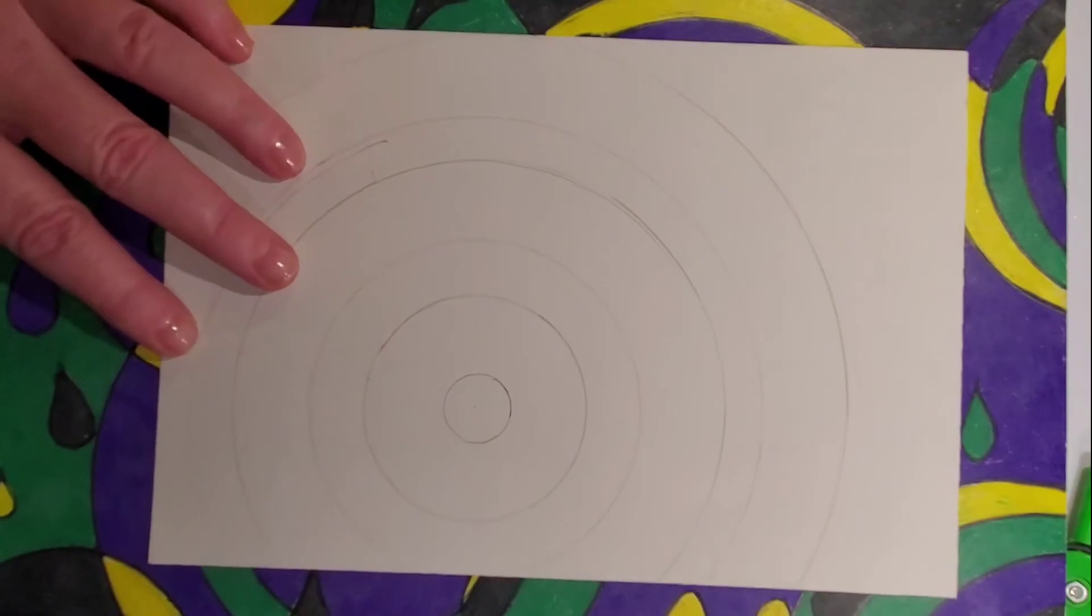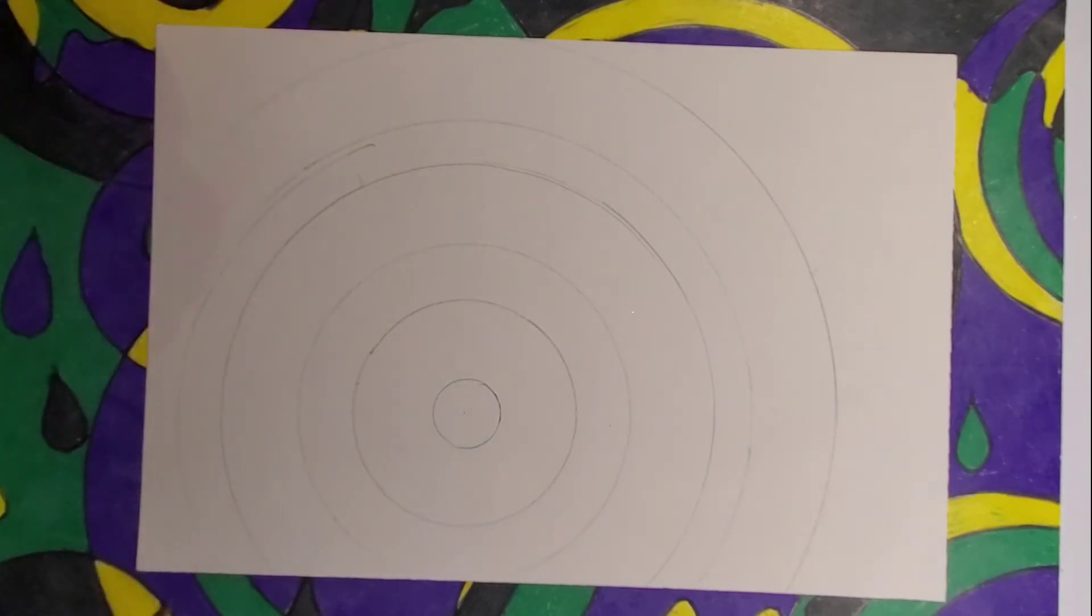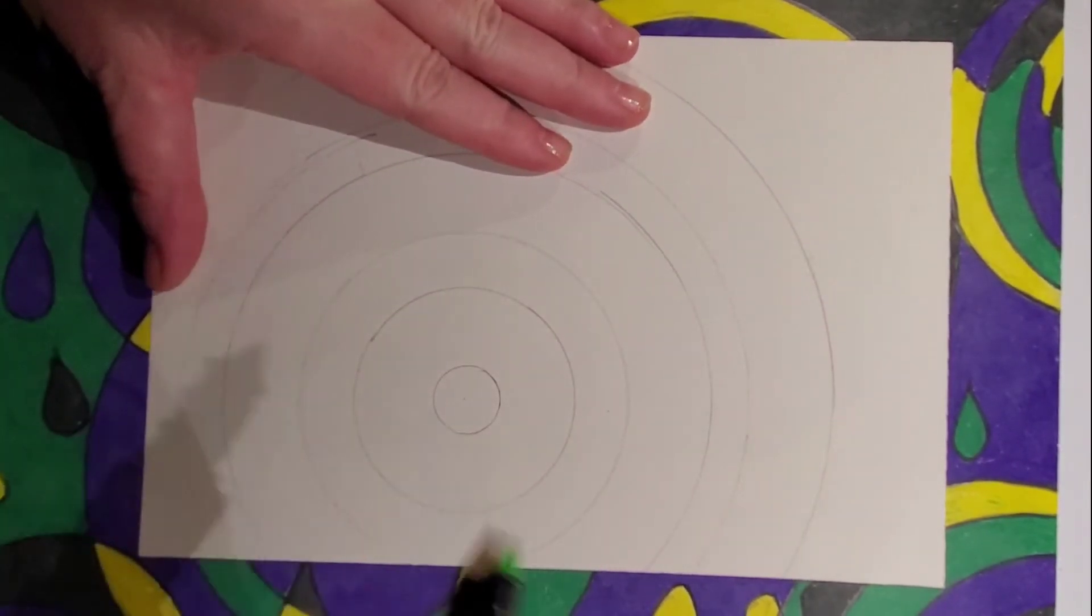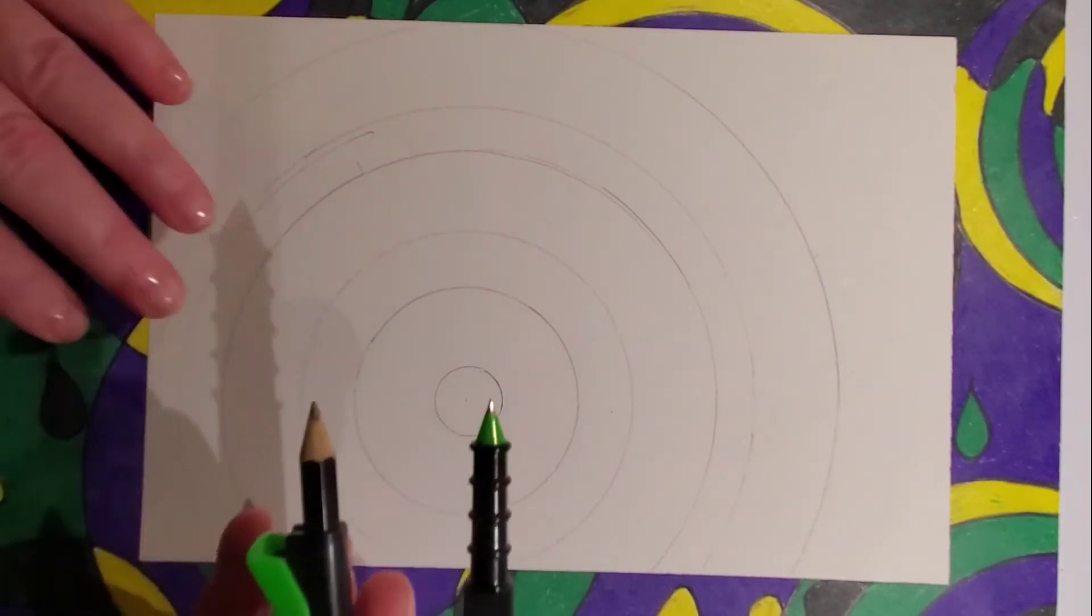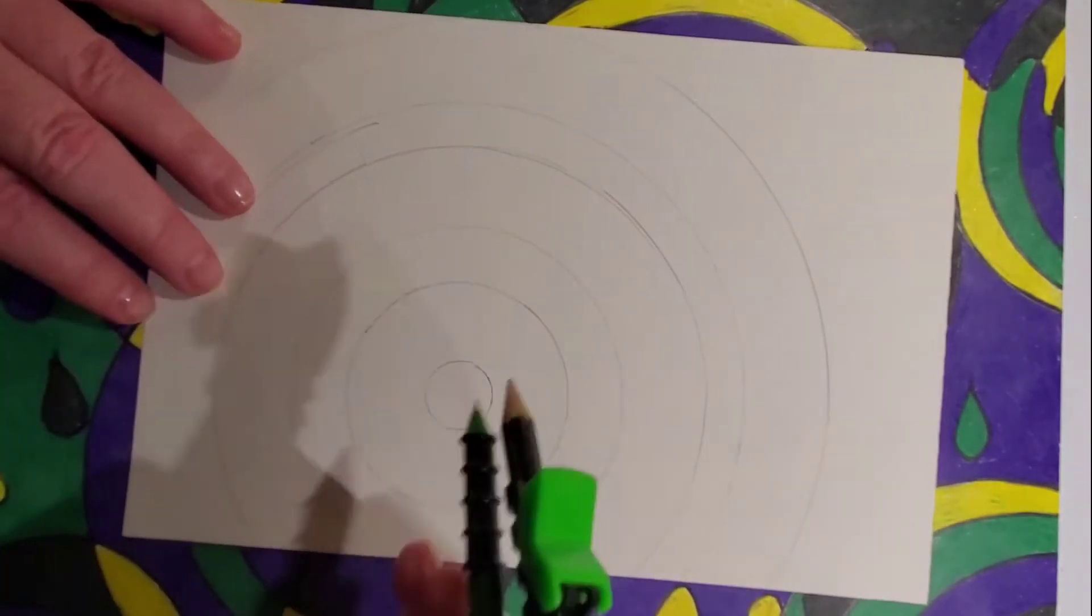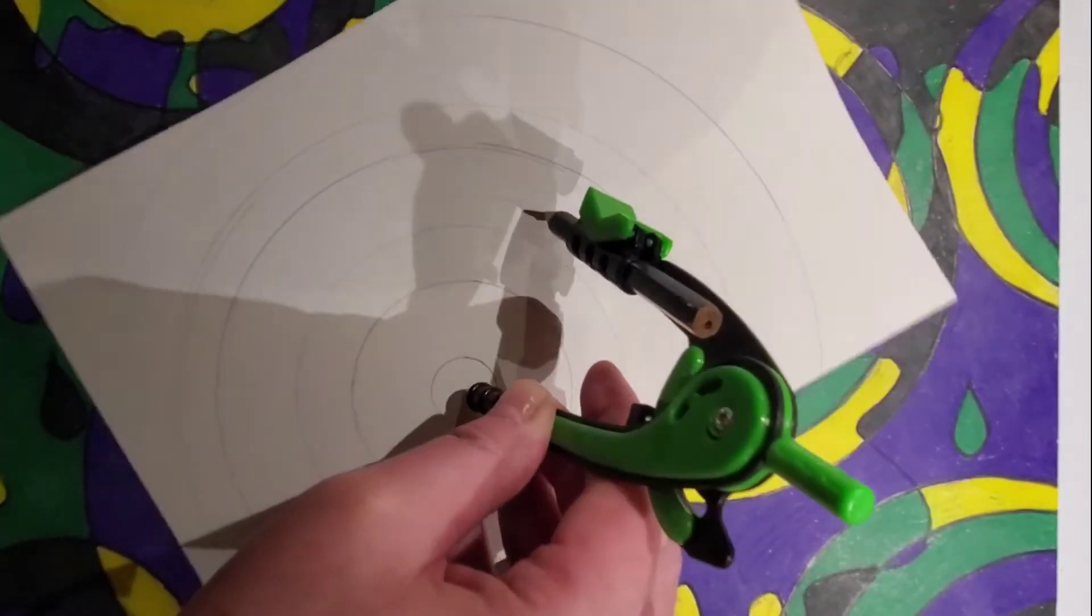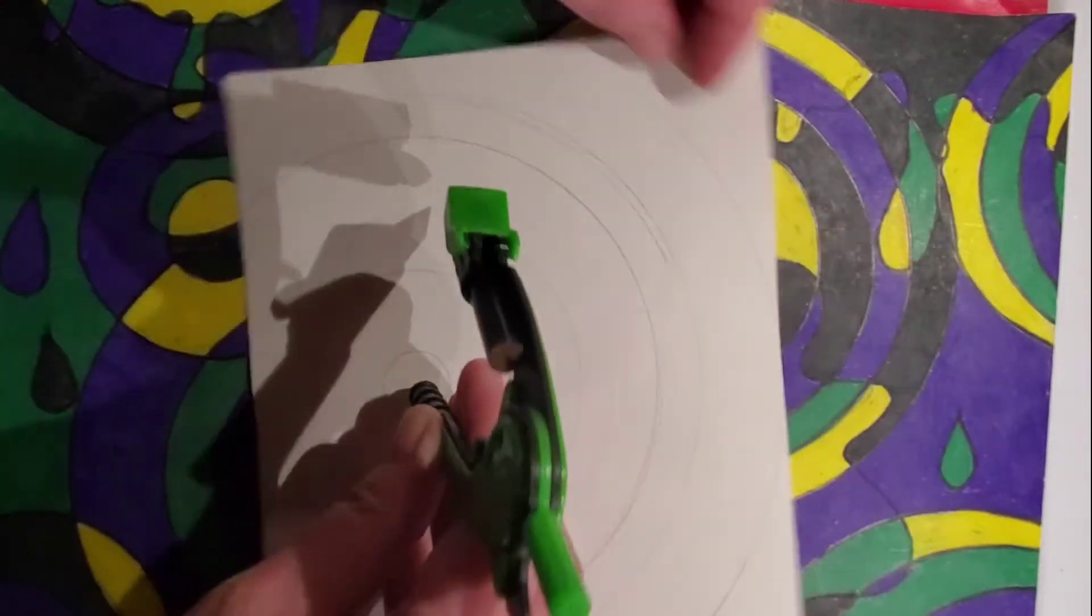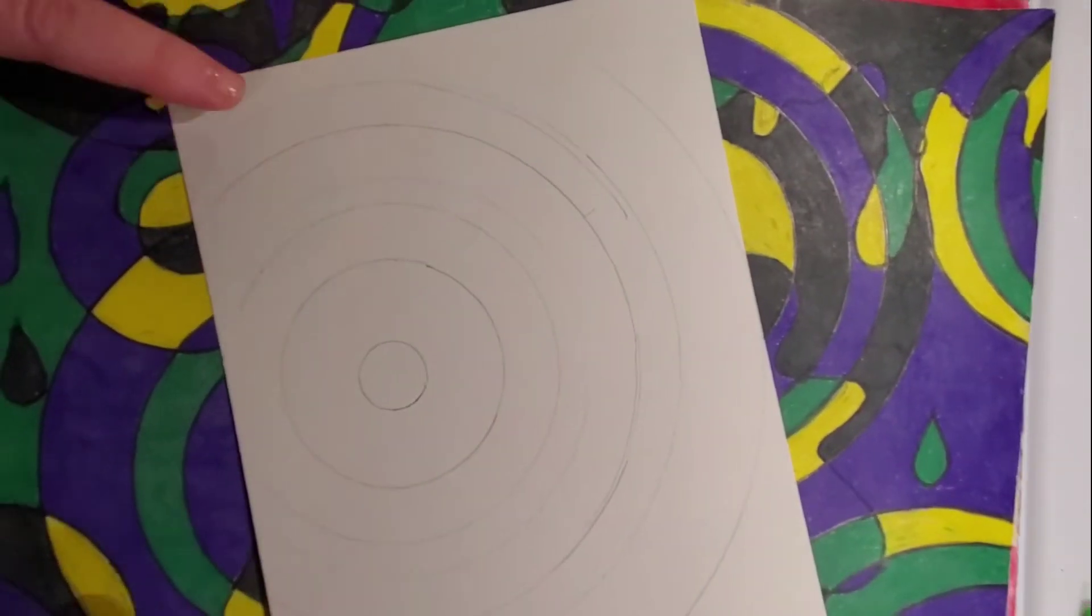Now you can create your concentric circles by using a compass. You can also just trace circular objects—just make sure that you trace the largest object first so that you can always center the circles and keep them concentric. I picked this up at the dollar store; these are not very expensive. You could probably get them at an office supply, and that way you can keep the circles concentric and you can draw any size you want just by changing this.